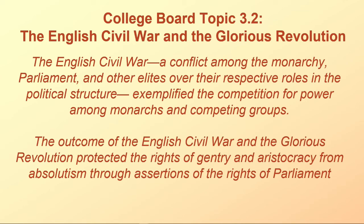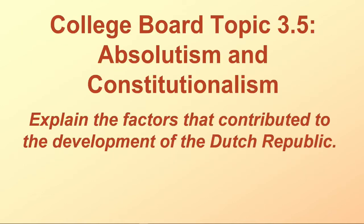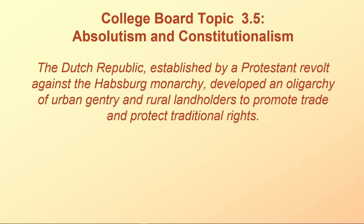The English Civil War, a conflict among the monarchy, Parliament, and other elites over their respective roles in the political structure, exemplified the competition for power among monarchs and competing groups. The outcome of the English Civil War and the Glorious Revolution protected the rights of gentry and aristocracy from absolutism through assertions of the rights of Parliament. College Board topic 3.5 is absolutism and constitutionalism. Explain the factors that contributed to the development of the Dutch Republic. The Dutch Republic, established by a Protestant revolt against the Habsburg monarchy, developed an oligarchy of urban gentry and rural landholders to promote trade and protect traditional rights.